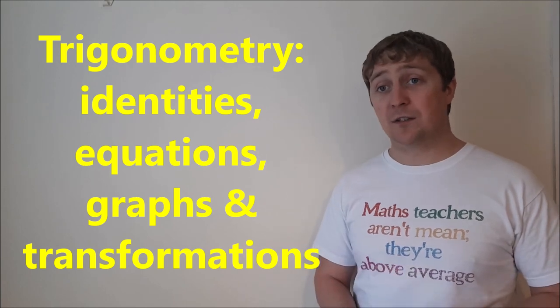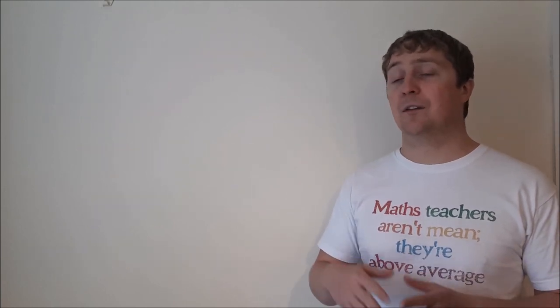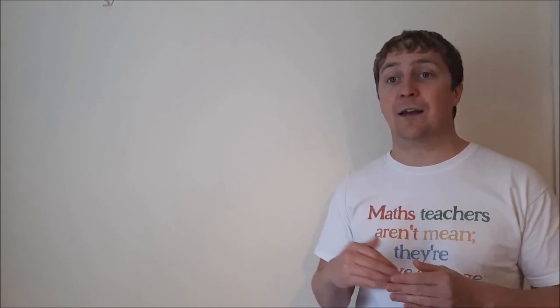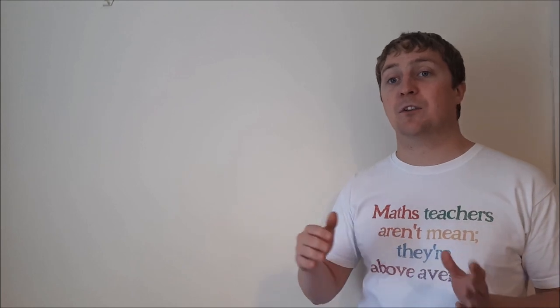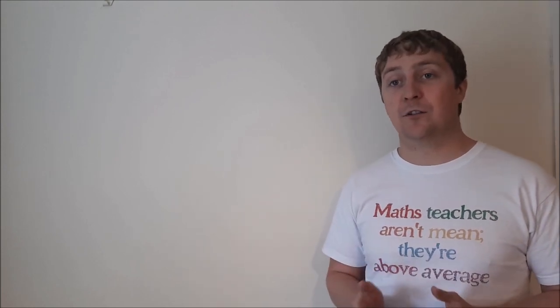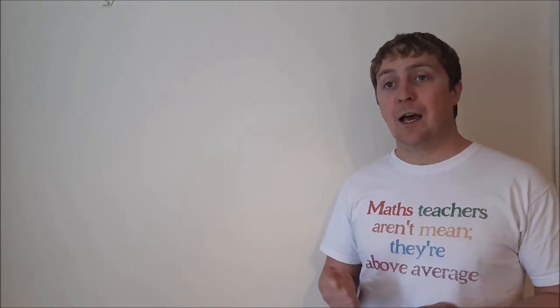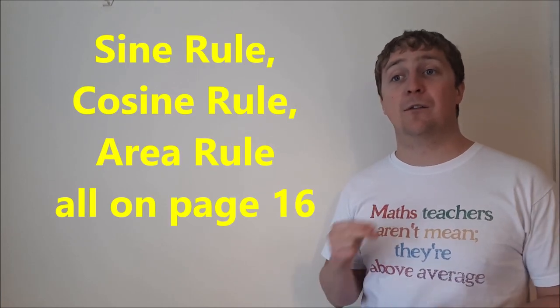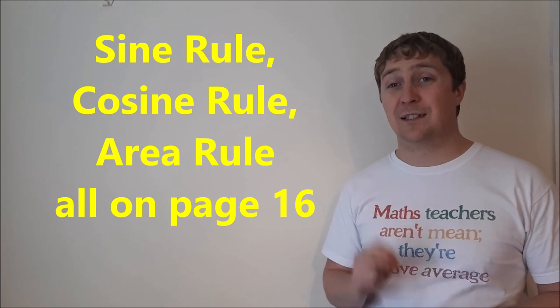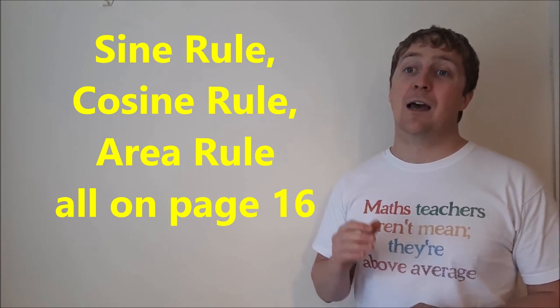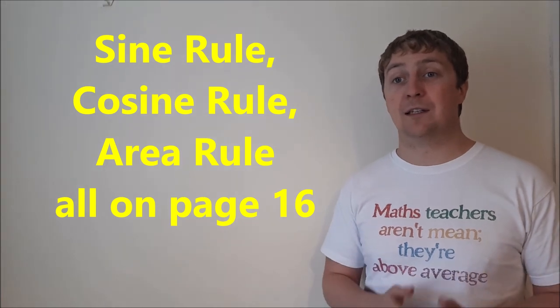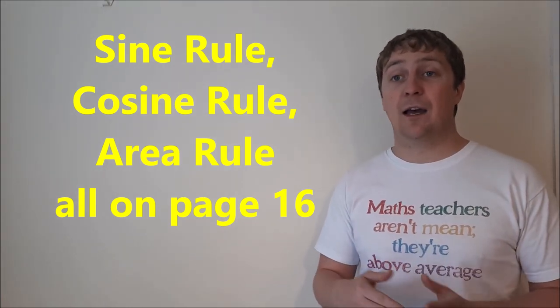You could have transformations on these graphs, so what happens to sine x when it becomes sine 2x or 2 sine x or sine x plus 2, and so you have different transformations going on there. And then of course you have your sine rule, your cosine rule, and your area rule. You'll find all them on page 16 of your log tables and you should be able to use them in any problem solving capacity, combining them together.